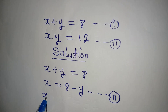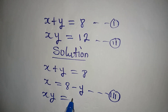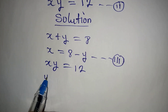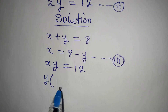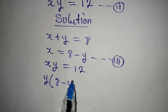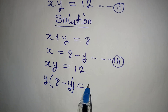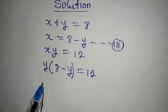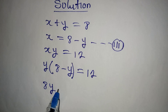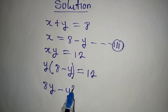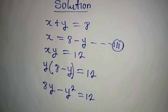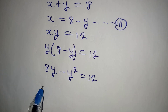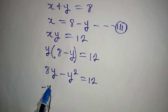Equation 2 is xy equals 12, so y multiplying x, and our x is 8 minus y, giving us y times (8 minus y) equal to 12. Opening the bracket, we have 8y minus y squared equals 12.